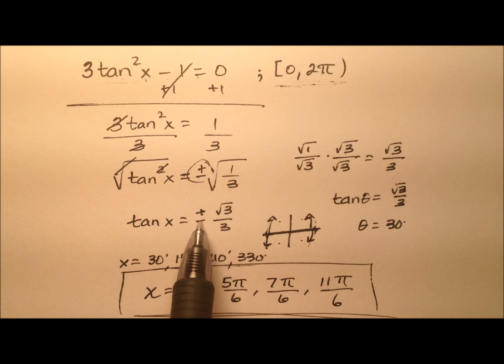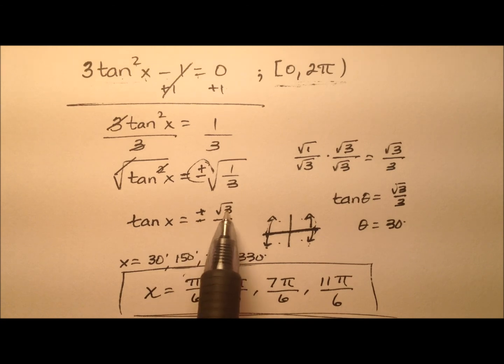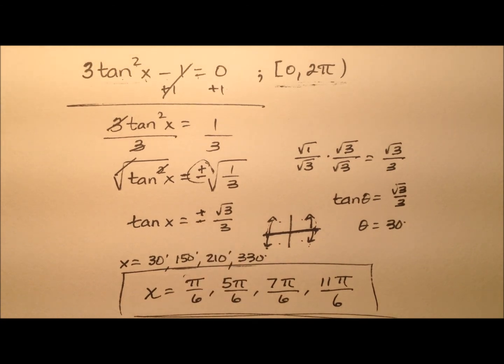And 4 was because we had a plus or minus. And we had the tangent of all of these values will be either positive or negative square root of 3 over 3.